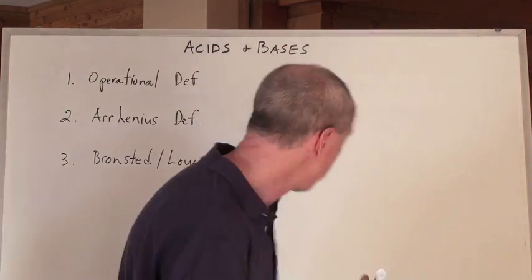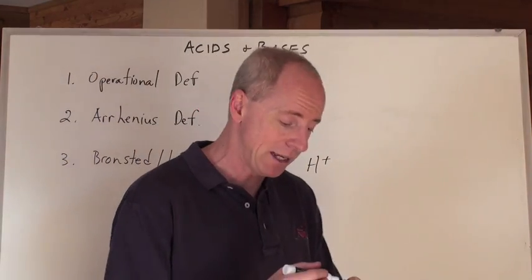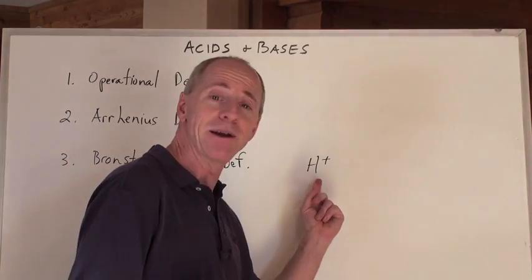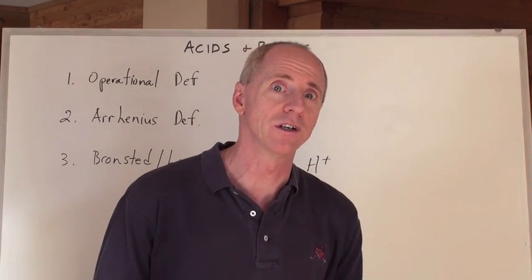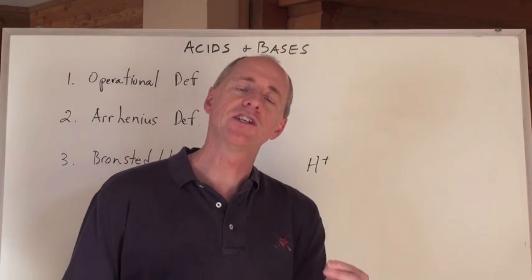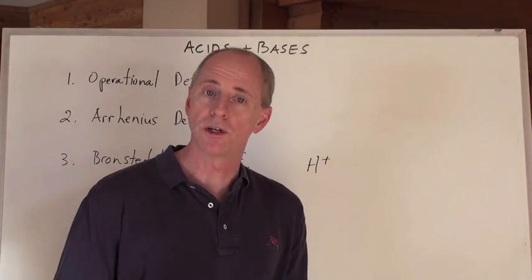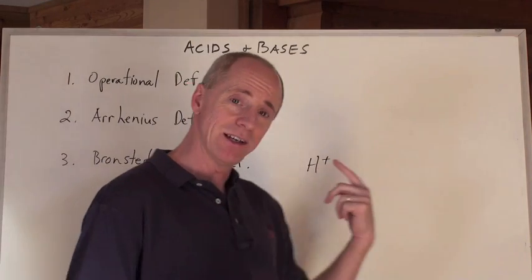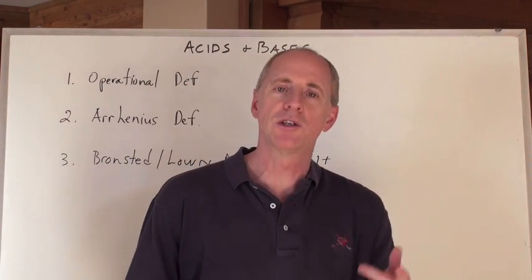And since, by the way, hydrogen ion, H-positive, really is a hydrogen atom minus an electron, that's just a proton left over. H-positive is a proton. And so the definition of a Bronsted-Lowry acid is it's a proton donor. And a base is a proton acceptor. So how does that work? Well, I'll show you some equations.